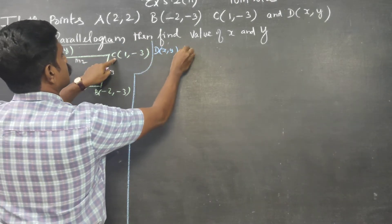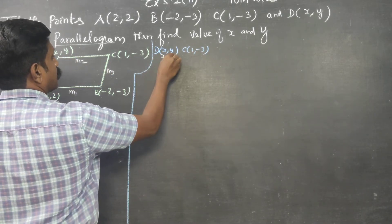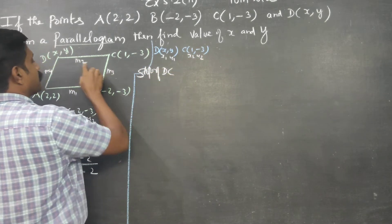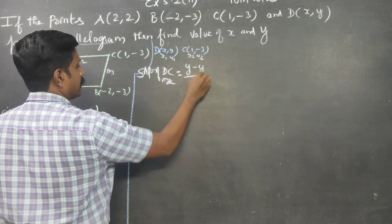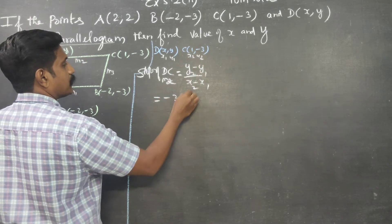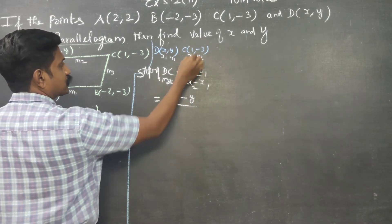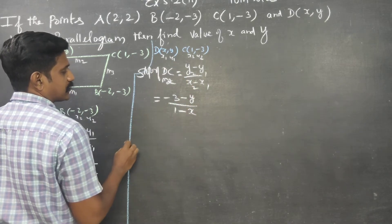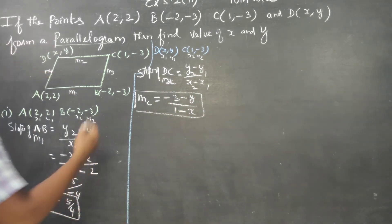Moving to slope of CD. C is (1, -3) and D is (x, y). This is x1, y1 and x2, y2. Slope of CD, M2. Formula: (y2 - y1) / (x2 - x1). So M2 = (-3 - y) / (1 - x). Simplify: letters subtract, numbers subtract.